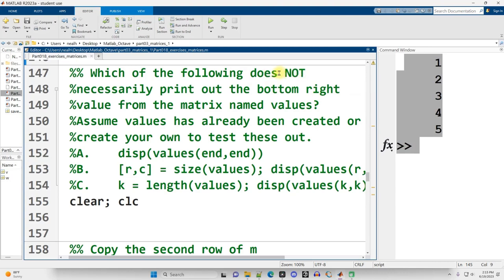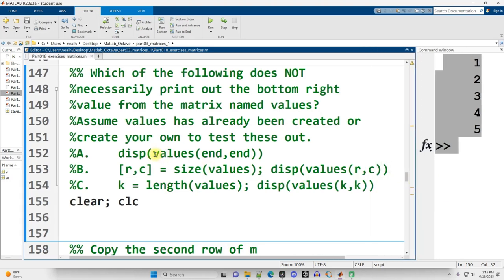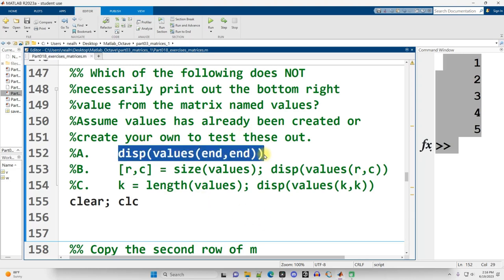Which of the following does not necessarily print out the bottom right value from the matrix named values? And let's go see what our options are right here. So imagine that we have a matrix named values. And you could create one to test this out. Display values, parentheses, end, comma, end, and then close parentheses. That absolutely will display the bottom right value from the matrix named values. So that one is good. That one works.